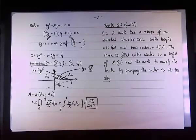A tank has a shape of an inverted circular cone with a height of 10 meters, base radius of 4 meters. The tank is filled with water to a height of 8 meters. Find the work to empty the tank by pumping the water to the top.